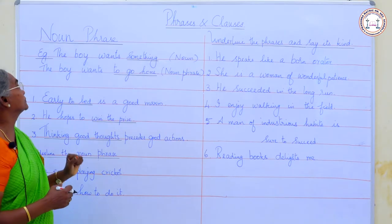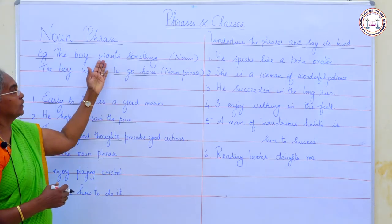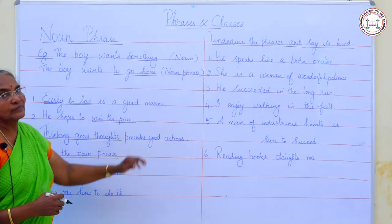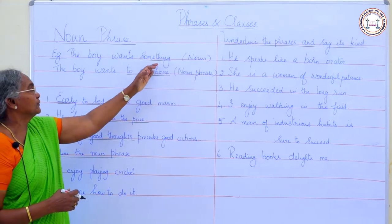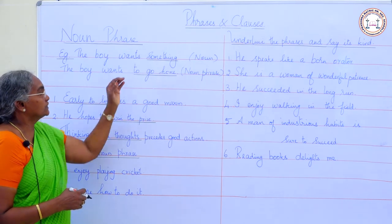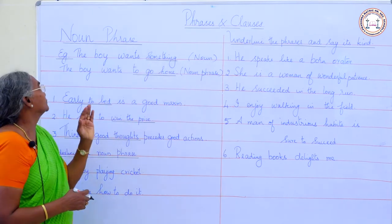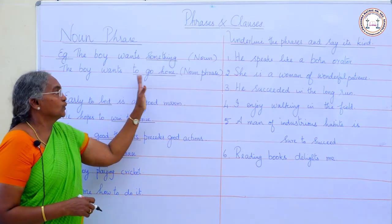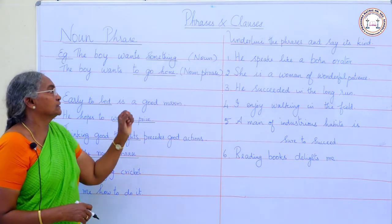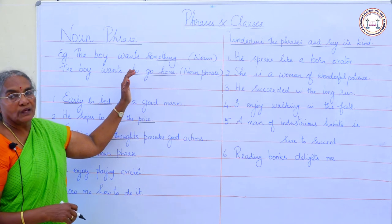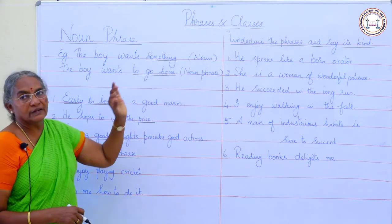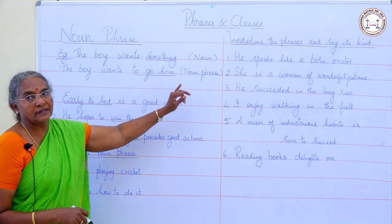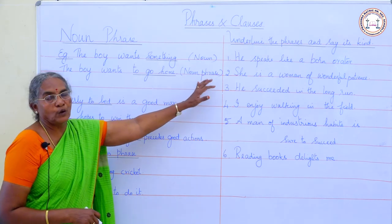Now we shall pass on to noun phrase. Example: 'The boy wants something.' 'Something' is the noun — it is the object of the verb 'wants.' Now change this noun into a noun phrase: 'The boy wants to go home.' 'To go home' is the noun phrase — a group of words functioning as a noun.